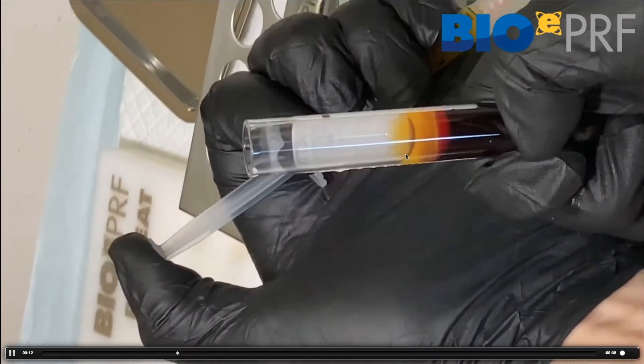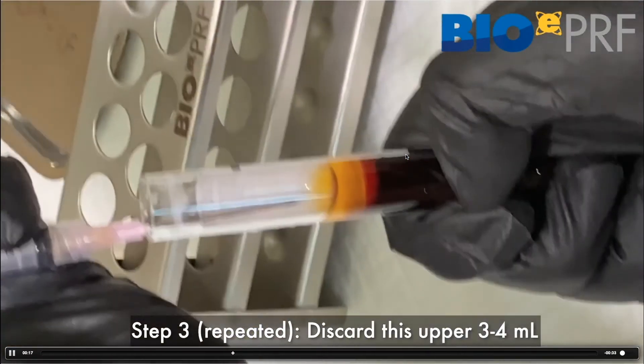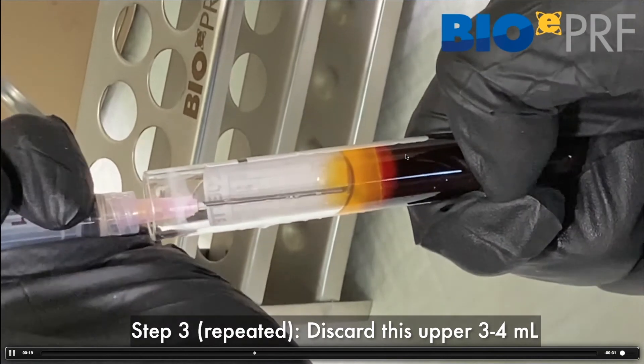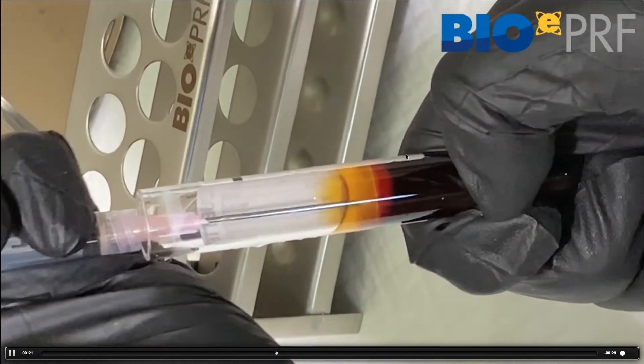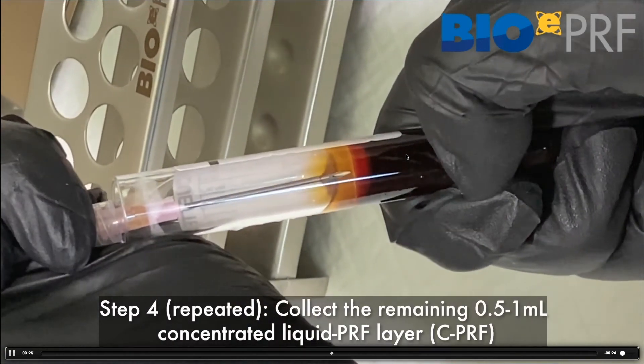You take out the top three, four mLs and then you're going to discard it. So you can just put it in the PRF bowl. When there's about one mL left, then you're going to take this very rich layer. And as we reviewed previously in chapter three, this is concentrated.